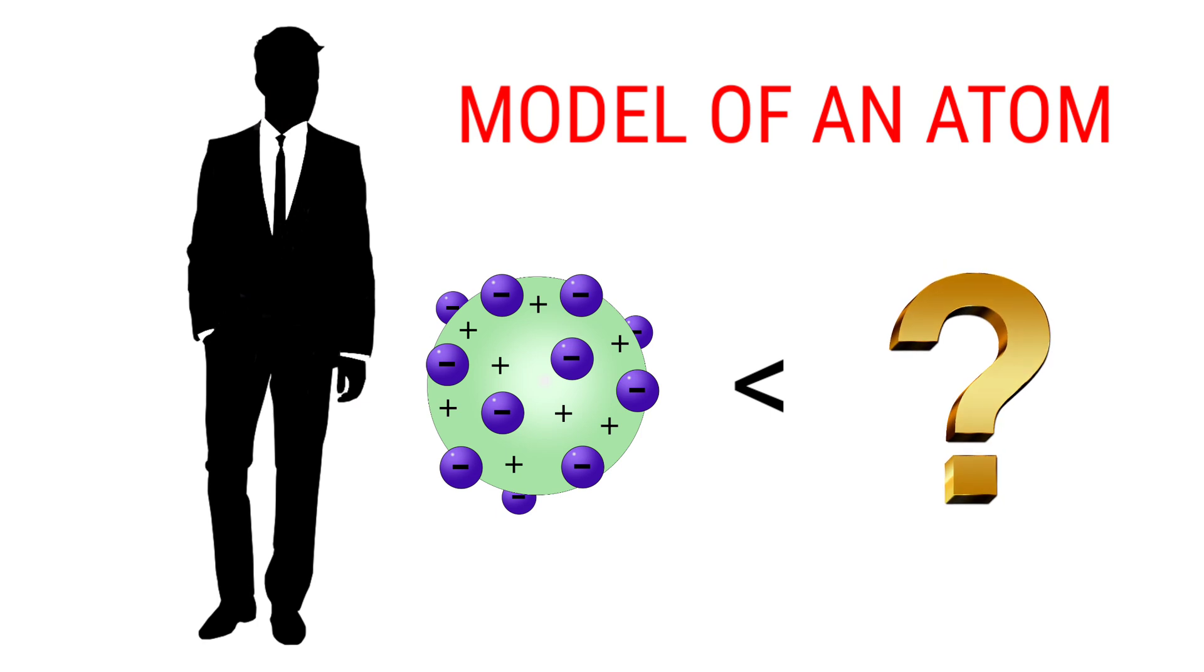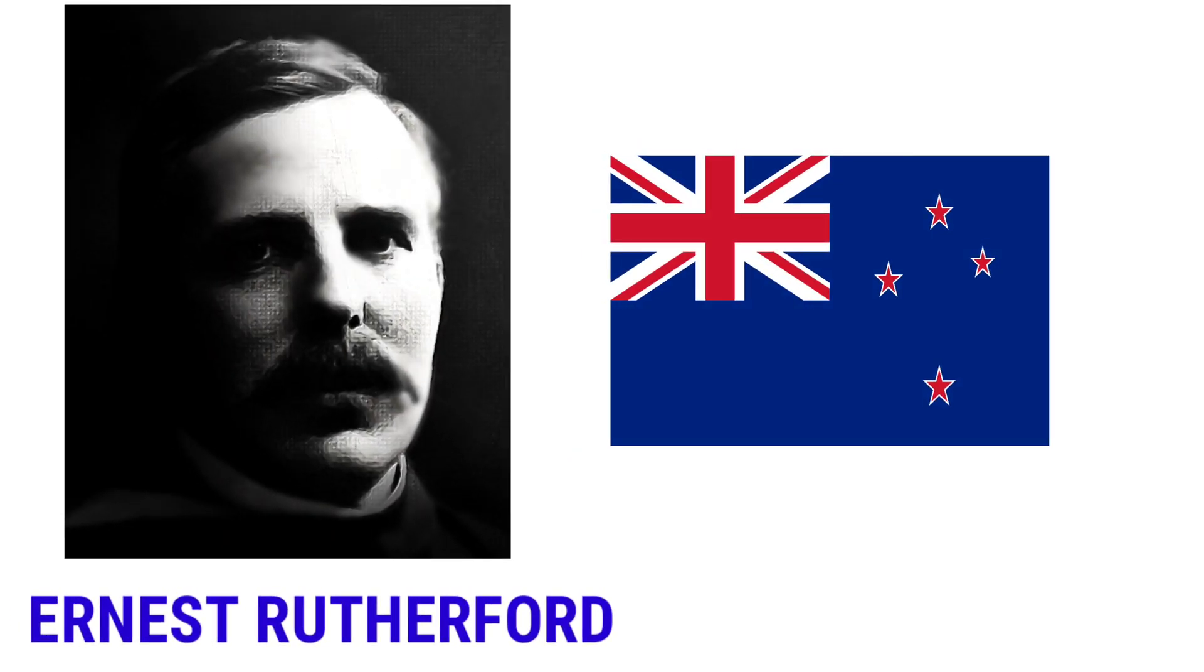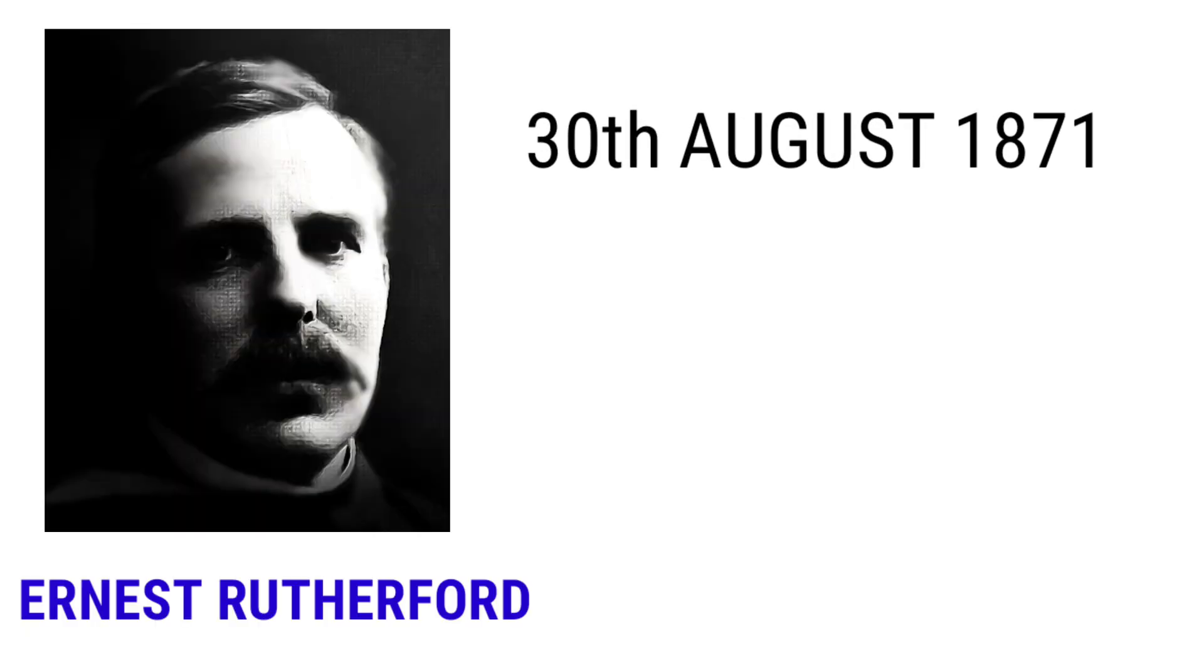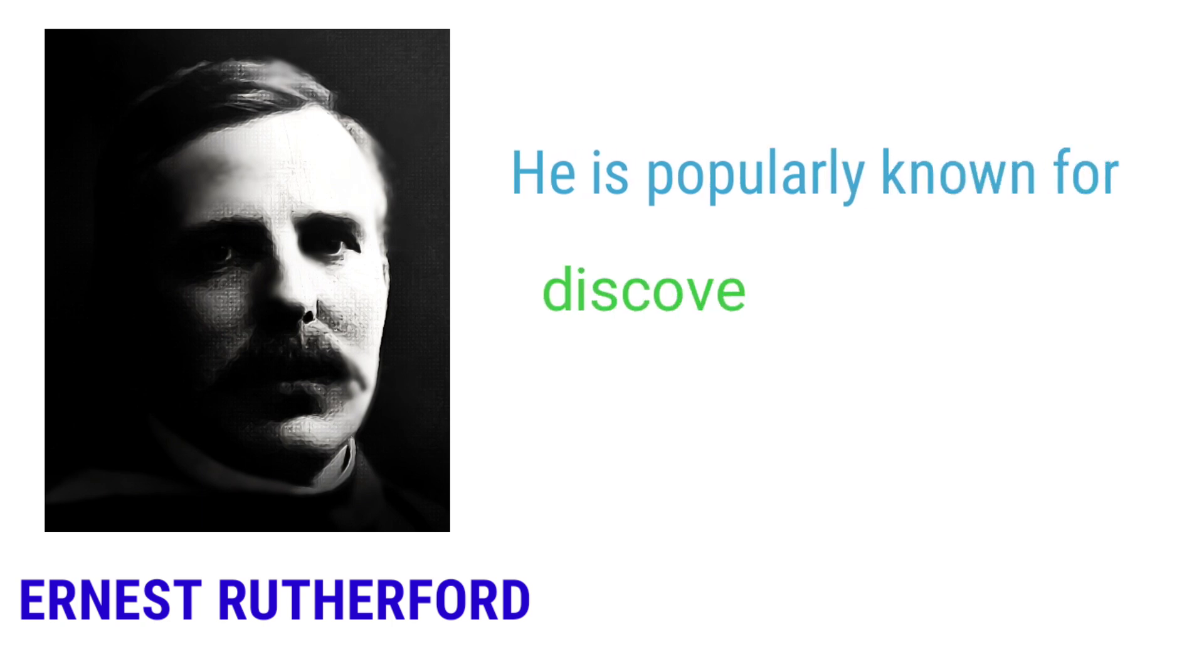So the man who discovered the new model of an atom which was more accurate along with the experimental results was none other than a native of New Zealand, Ernest Rutherford. He was born on 30th August in Brightwater, Colony of New Zealand. He is popularly known for the discoveries of alpha and beta radioactivity.